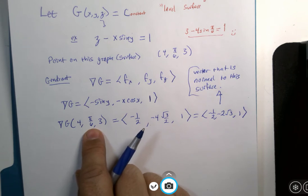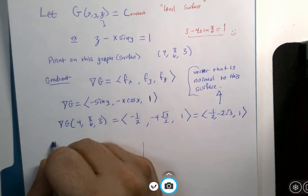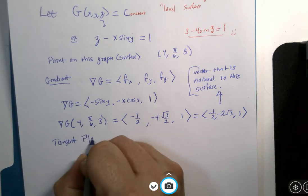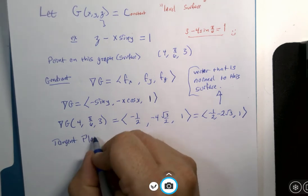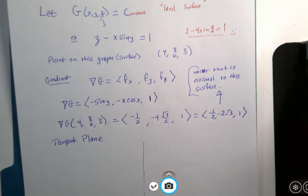So without having any visual, I could write the equation of a tangent plane, a plane that just touches the surface at that one point of intersection there, the tangent plane.